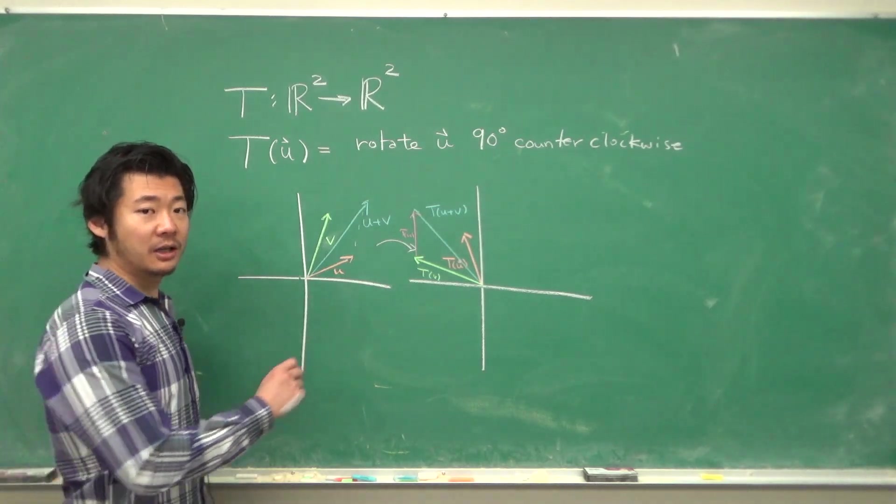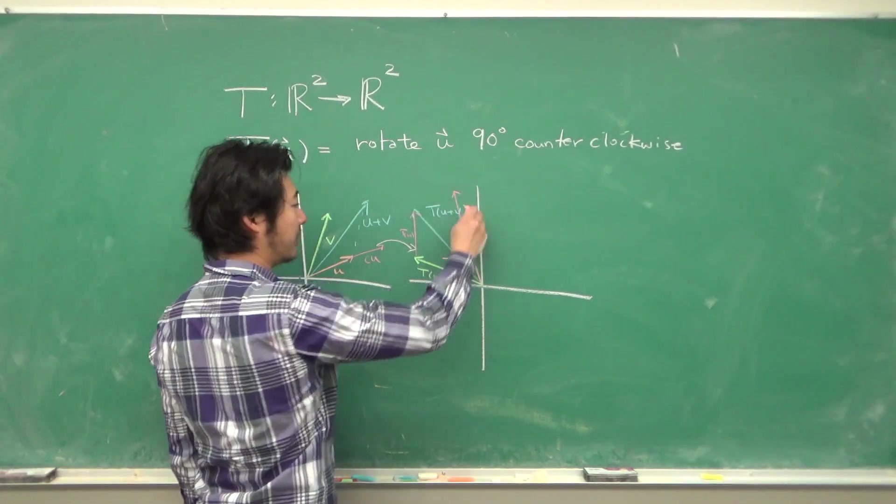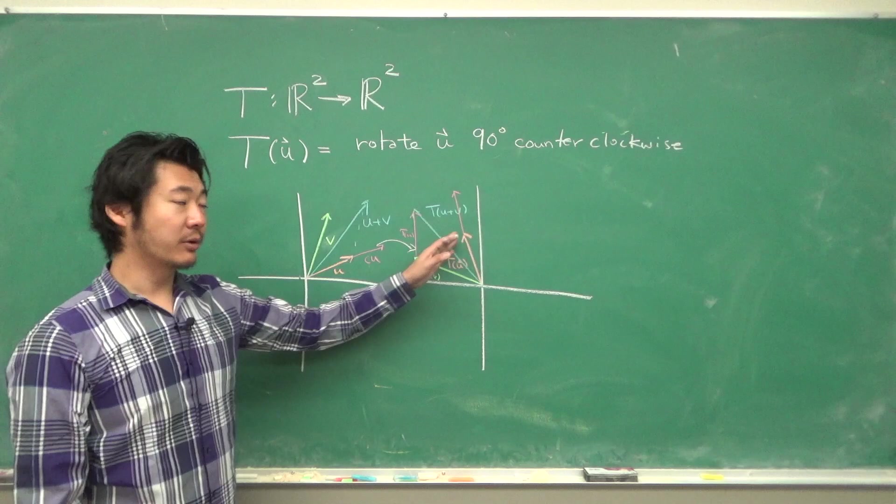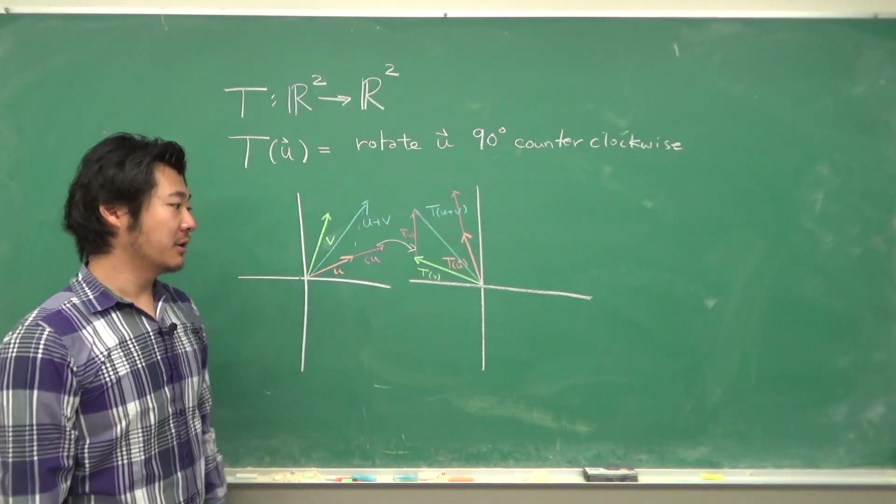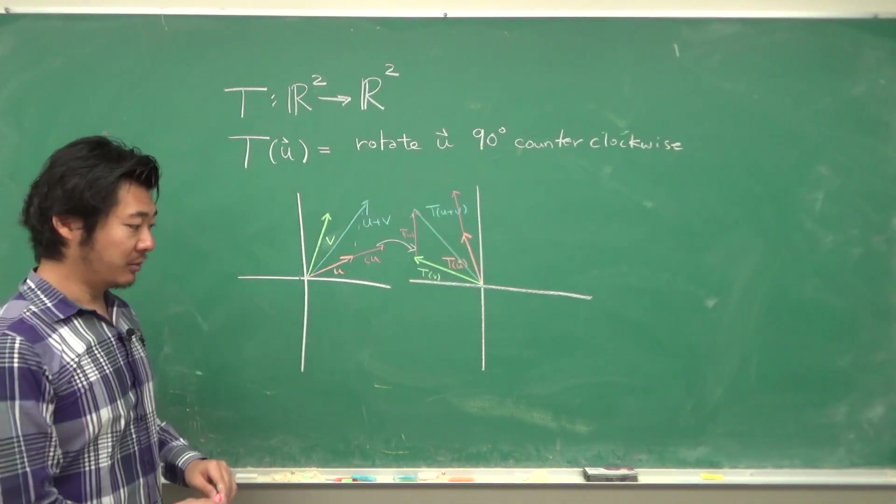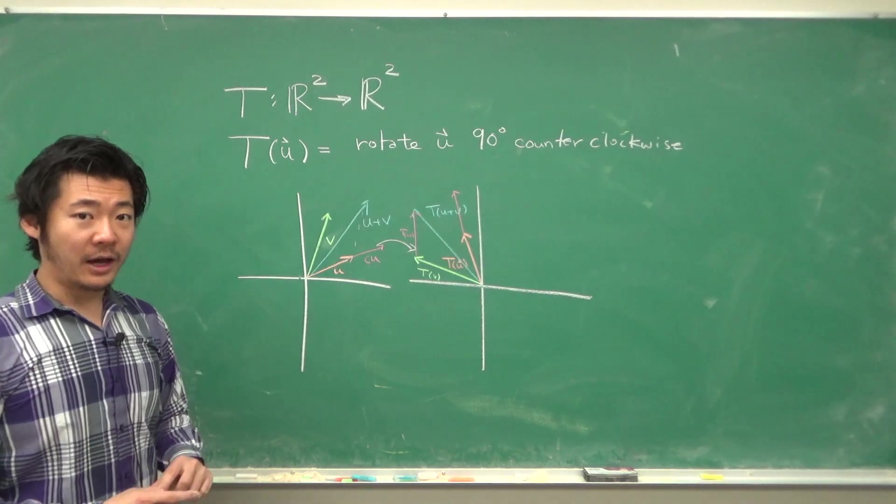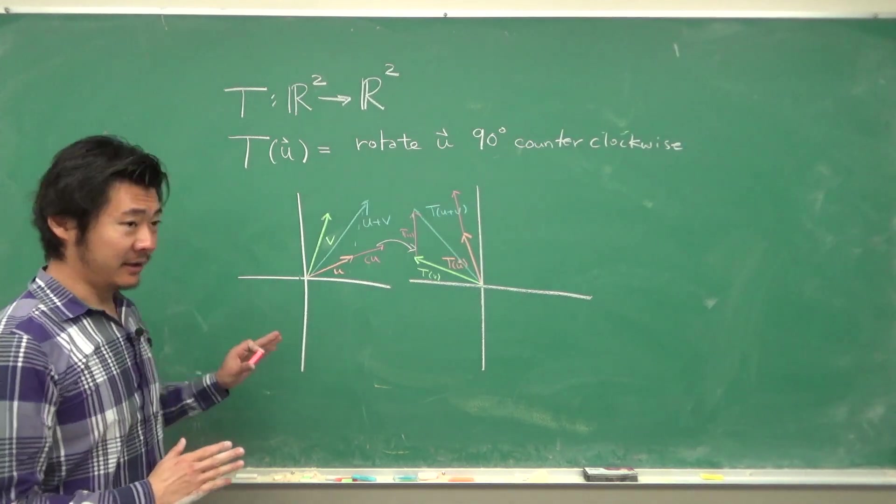For scalar multiplication, if we make this u longer, then the resulting vector is a rotated vector and it's scaled the same length. So the scalar multiplication can move in and out of the linear transformation. And so this is indeed a linear transformation.